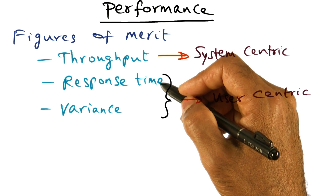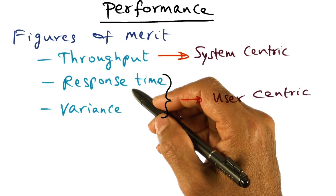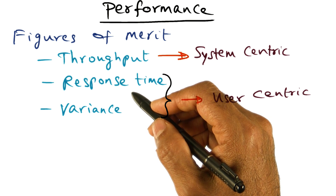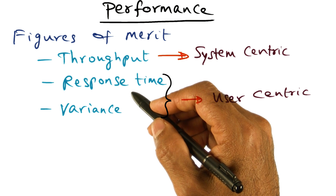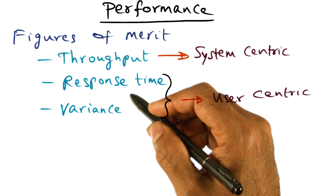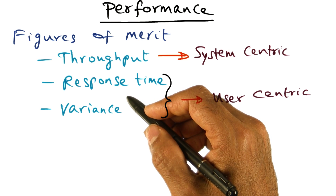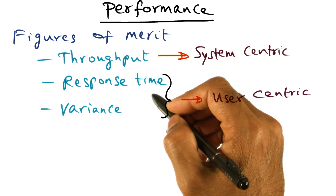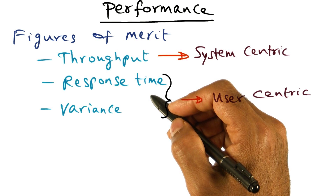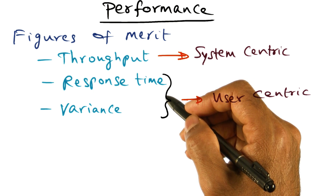Why will it vary? If you think about a first come first serve policy: if I have a very small job to run and it gets the processor immediately, it's going to quickly complete its execution. But suppose when I start up my particular thread, there are other threads ahead of me that are going to take a long time to execute — then I'm going to see a very poor response time. So from run to run, the same program may experience different response times depending on the load currently on the system.